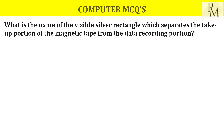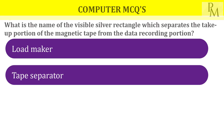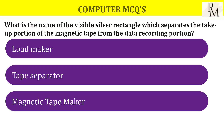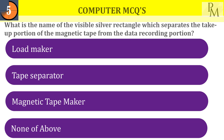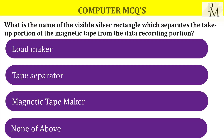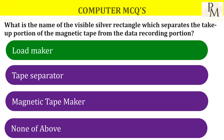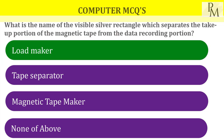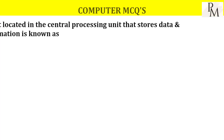Our first question is: what is the name of the visible silver rectangular which separates the take-up portion of the magnetic tape from the data recording portion? The answer is load marker.